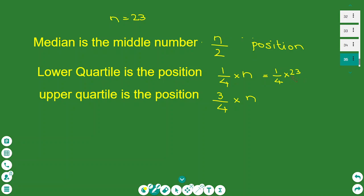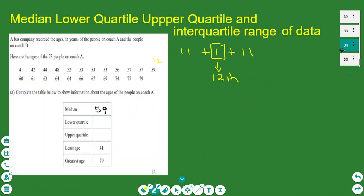But you round up. It's 5.75, so you round up to the sixth number. So the lower quartile is the sixth number. Let's find what is the sixth number.